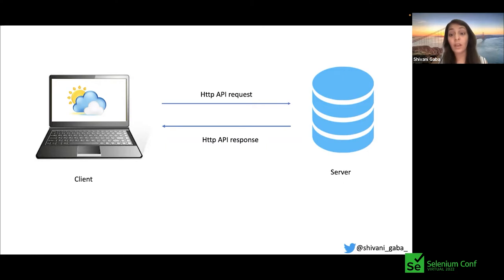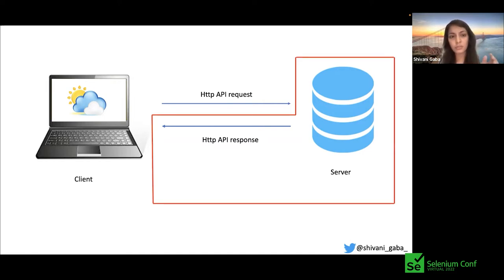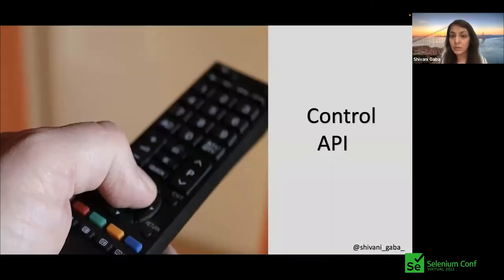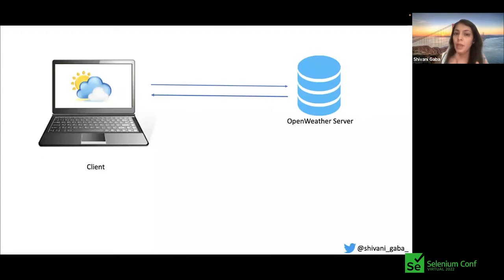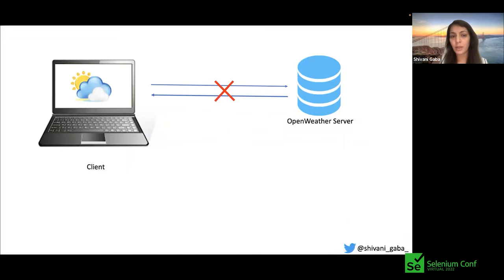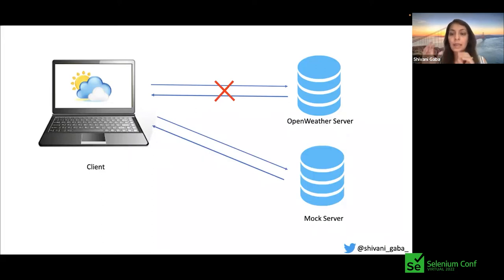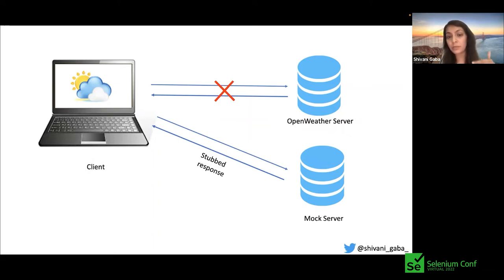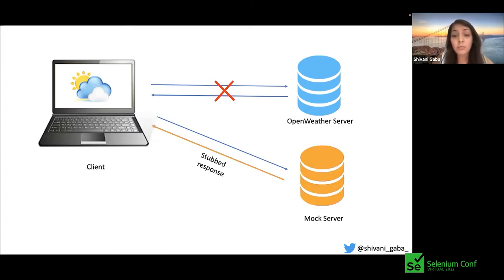To test and automate many cases in a stable way, we lack control over the server side. What we need is to control the API. We break the connection to the real server, create a mock server under our control, and configure it to return stubbed responses — valid responses, invalid responses, or even error responses.